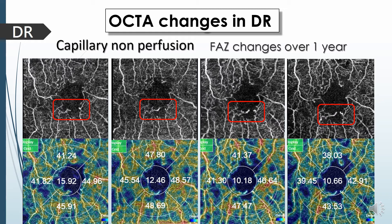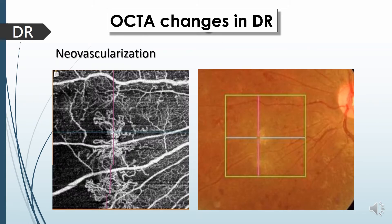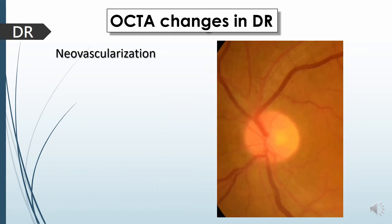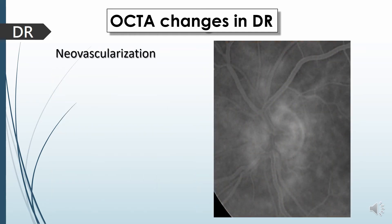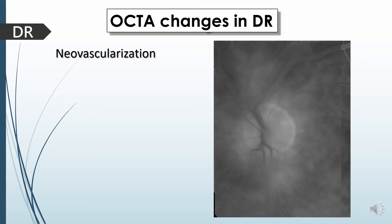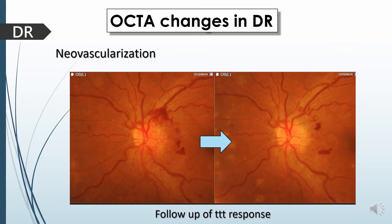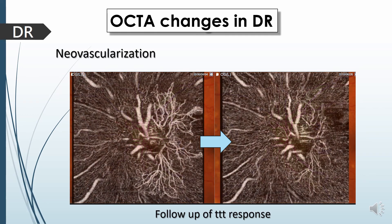OCT-A can also well delineate rising neovascular tufts in NVEs better than FFA, where leakage masks those lesions. Sometimes color and fluorescein angiogram are equivocal and not conclusive about the source of leakage; however, OCT angiography clearly delineates the hanging neovascular tuft from the edge of the disc. We can safely repeat OCT-A scans to follow up PDR patients and detect treatment response and regression of neovascularizations after injection of anti-VEGF or after pan-retinal photocoagulation.